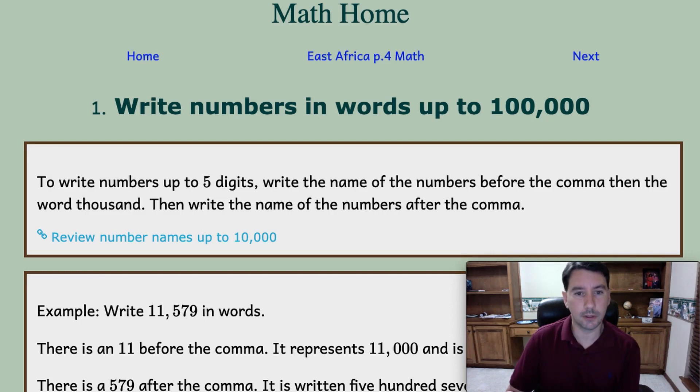Welcome back. In this lesson we're going to talk about writing numbers in words for numbers up to 100,000. To write a number that's five digits in words, you first write the name of the numbers that come before the comma, in other words the numbers in thousands.